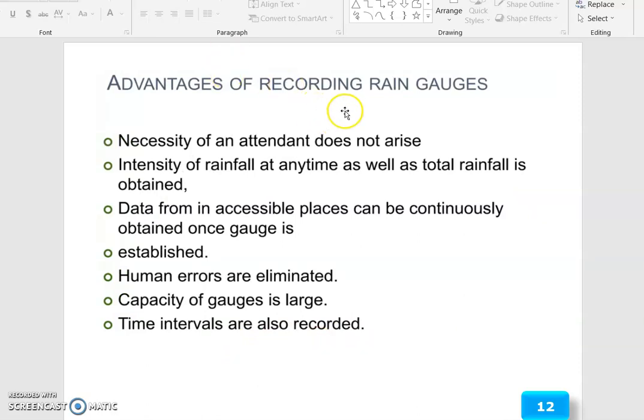The advantages of recording rain gauges: necessity of an attendant does not arise. Intensity of rainfall at any time, as well as total rainfall, is obtained. Data from inaccessible places can be continuously obtained once gauge is established. Human errors are eliminated. Capacity of gauge is large. Time intervals are also recorded.